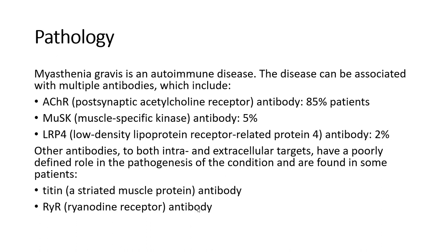Pathology. Myasthenia Gravis is an autoimmune disease associated with multiple antibodies. These include AChR — the post-synaptic acetylcholine receptor antibody — found in approximately 85% of cases, and MUSK — the muscle-specific kinase antibody — found in approximately 5% of cases. Other antibodies with both intra- and extracellular targets have a poorly defined role in pathogenesis and are found in some patients.